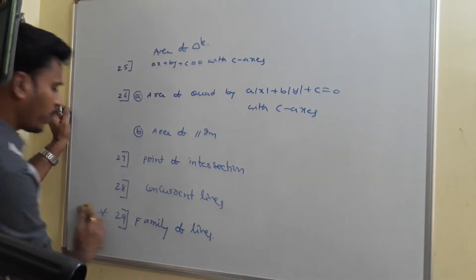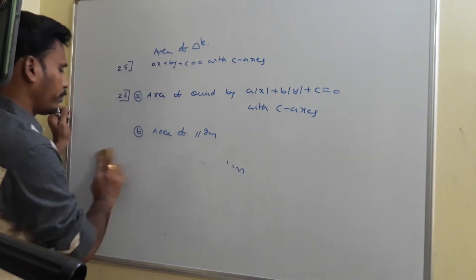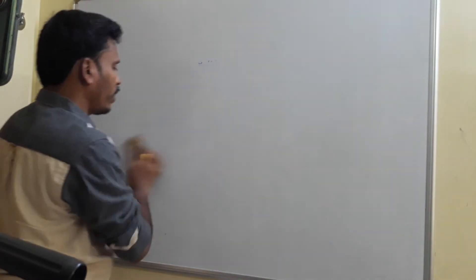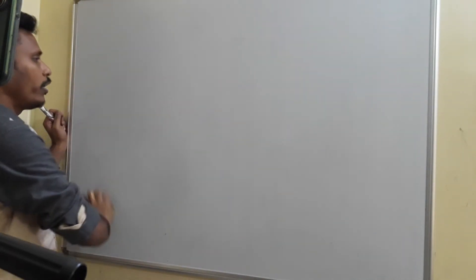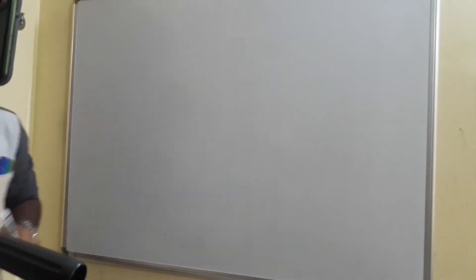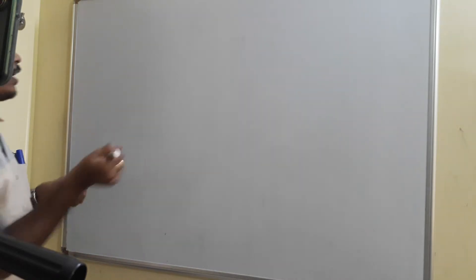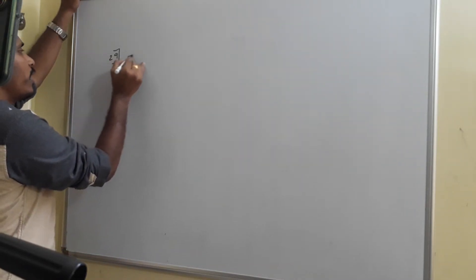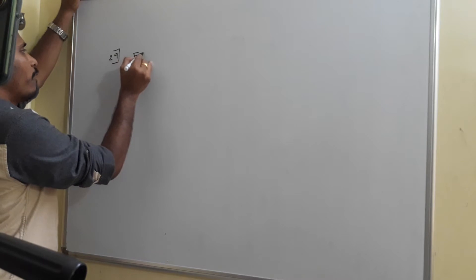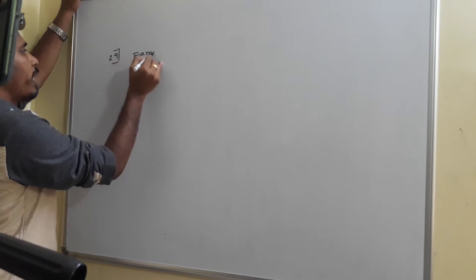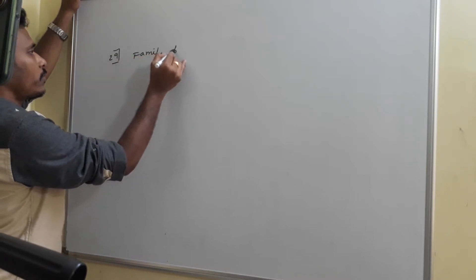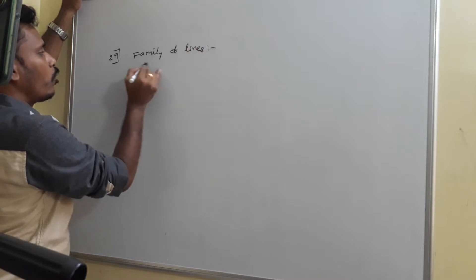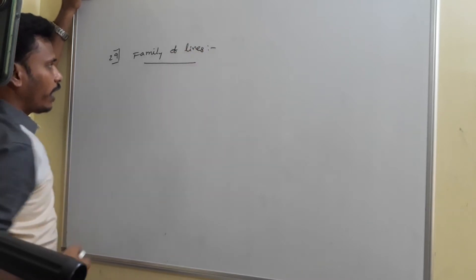Look at the 29th point. You need to maintain everything point-wise and have screenshots for each and every point. The 29th one is related to the family of lines. What is meant by the family of lines?